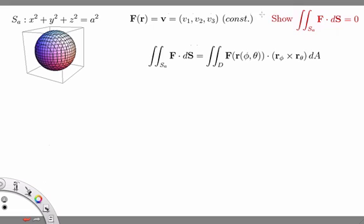In this example we want to show that the flux of a constant vector field through the entire sphere of radius a is zero. So this is for a sphere of any radius a and for a constant vector field.